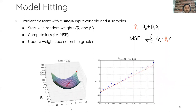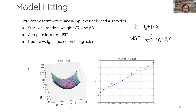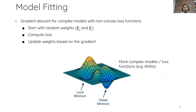This basic loss function has only one global minimum. But that may not be the case for more complex models and loss functions — you may have multiple local minima and you need more sophisticated algorithms to avoid getting stuck. But the idea of updating weights stays the same.